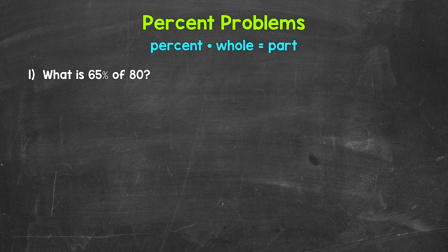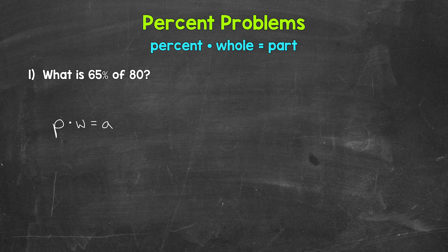Now in this video, our unknown will be the part. Let's jump into number one, where we have what is 65% of 80. Basically, this is saying 65% of 80 is what part of 80, is what number out of 80. I'm going to start by writing the equation using variables, and then we will plug in.